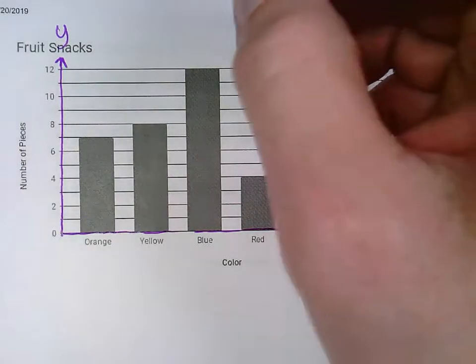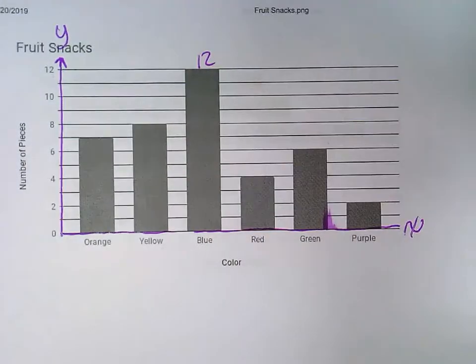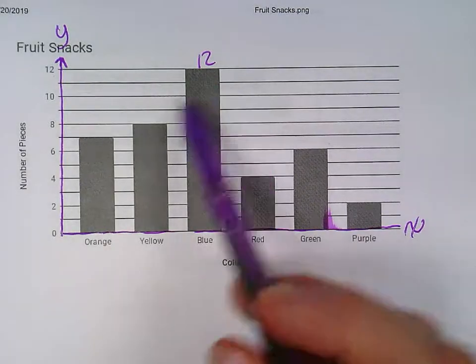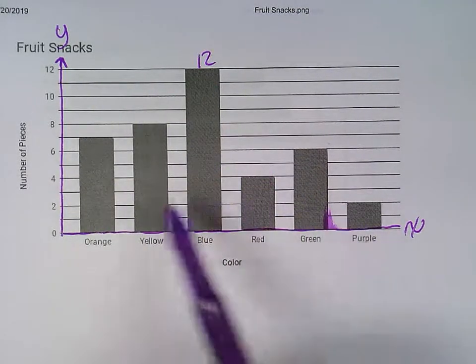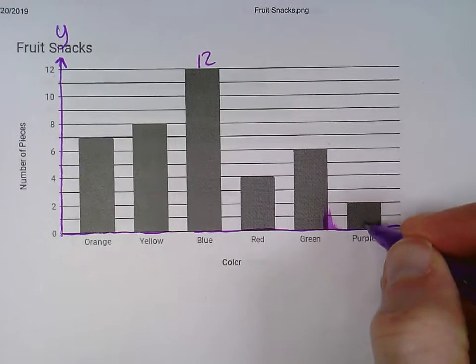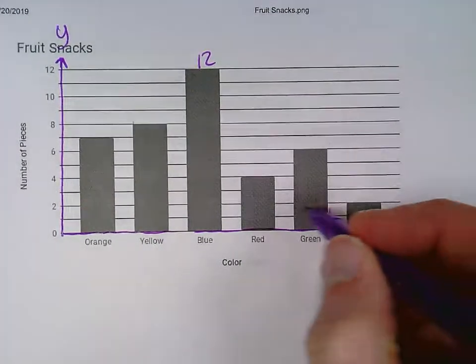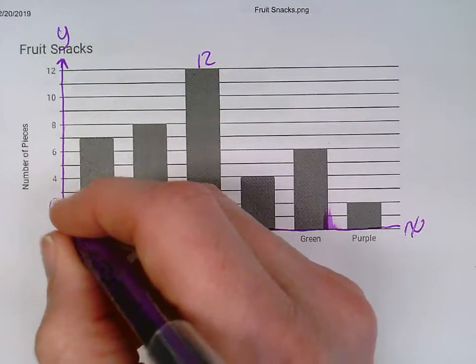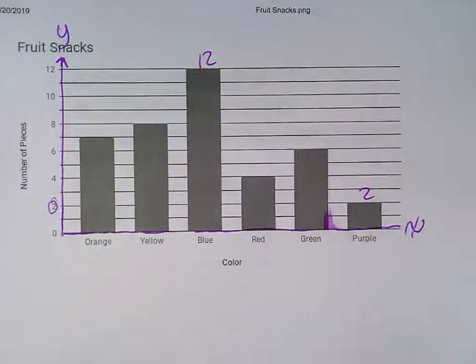So that's my largest piece of data. My smallest piece, I go through here and I find which bar is the smallest. Here's purple, that's the shortest bar, and I can see I go take my line over. There's been two purple fruit snacks that have been found.